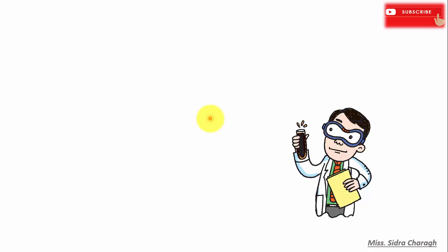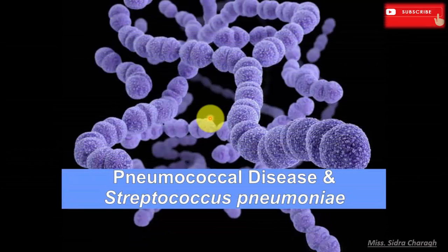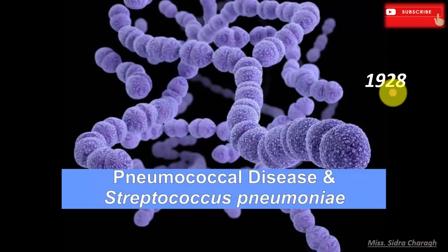In this lecture, we will talk about Griffith's transformation experiment. Griffith in 1928 was working on bacterium known as Streptococcus pneumoniae.